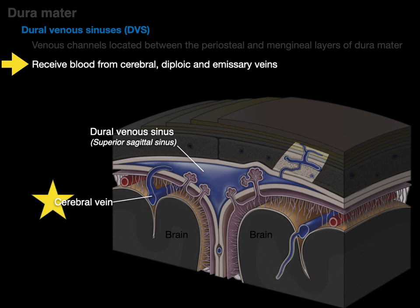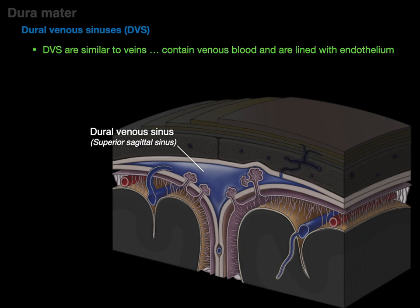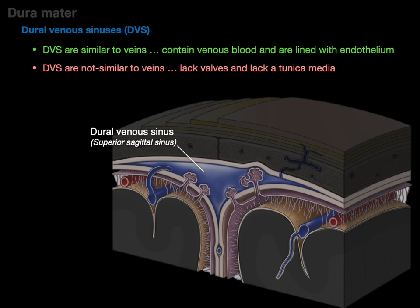The cerebral veins — including the great vein of Galen — all eventually end up in a dural venous sinus. The emissary veins go from the scalp through the skull and drain into one of the dural venous sinuses. The diploic veins go from the skull into one of these dural venous sinuses. Now, dural venous sinuses are similar to veins in that they contain venous blood (deoxygenated blood) and they're lined with endothelium. But they are not similar to veins in that they lack valves — meaning blood can flow in any direction — and they lack a tunica media, because it's basically dura mater, dense connective tissue lined with endothelium.